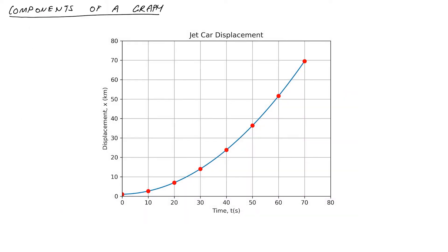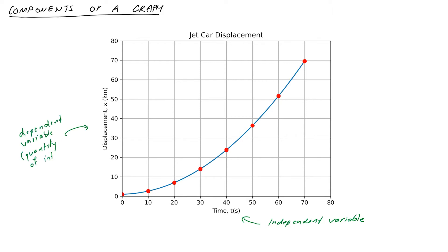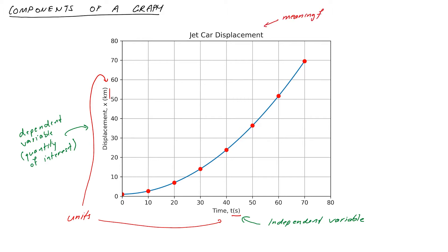Let's quickly look at some components of graphs. The variable along the horizontal axis is the independent variable — for most of our problems that will be time. The vertical axis contains the dependent variable, usually the quantity we're interested in, such as displacement or velocity. Key things that must always be included: axes must have labels indicating the variable and units, otherwise they can be ambiguous or meaningless. And we need a title that makes sense in the context of the graph.